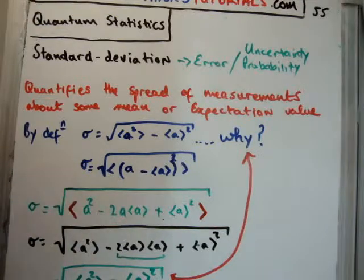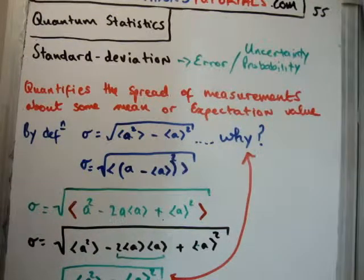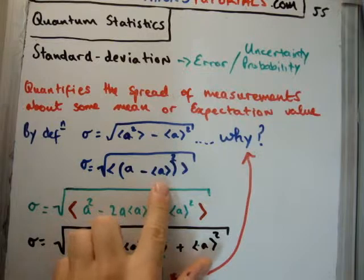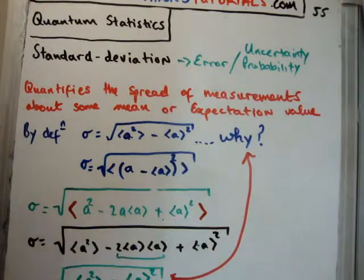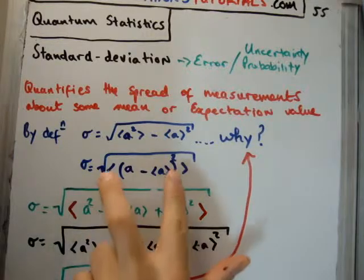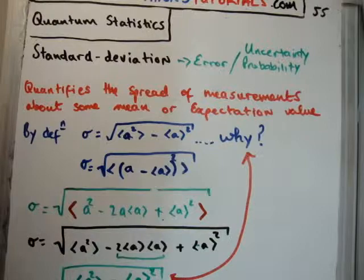You quantify the spread of your measurements away from the mean value, which is given here by this angle of brackets. You square it in order to get a positive quantity, because we know the spread around the average is going to sum to zero. We take its average, and then we square the whole thing to get the RMS value.